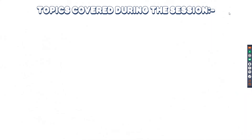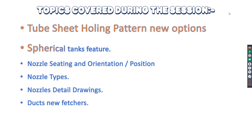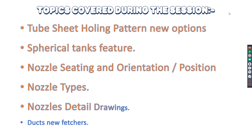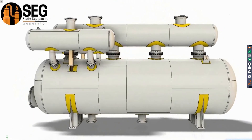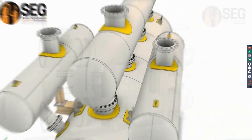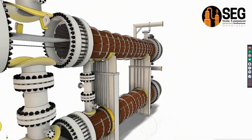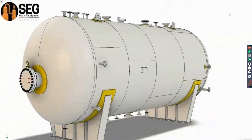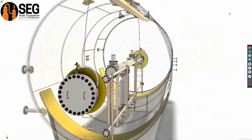The topics covered during this session: tube sheet holing pattern new options, spherical tanks features, nozzle seating and orientation, nozzle types, nozzle detail drawings, and duct new features. Here are some real samples created by SCG software, including a heat exchanger and a desalter unit with internal piping and piping support.